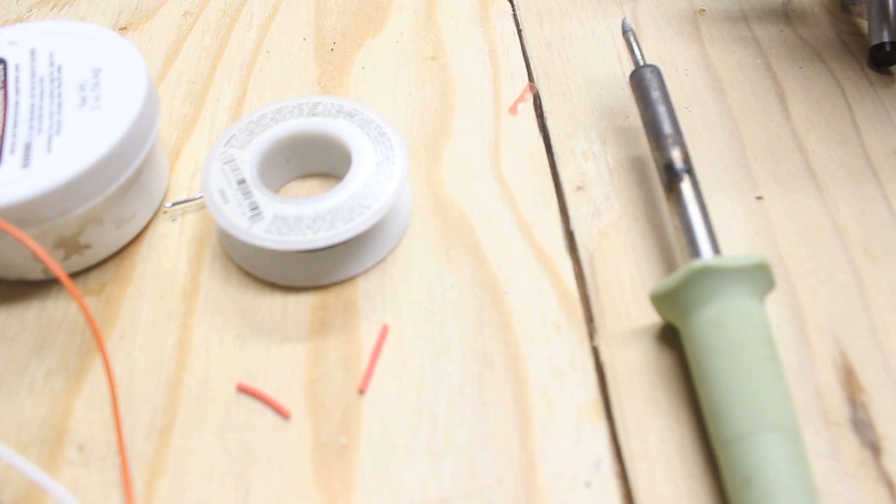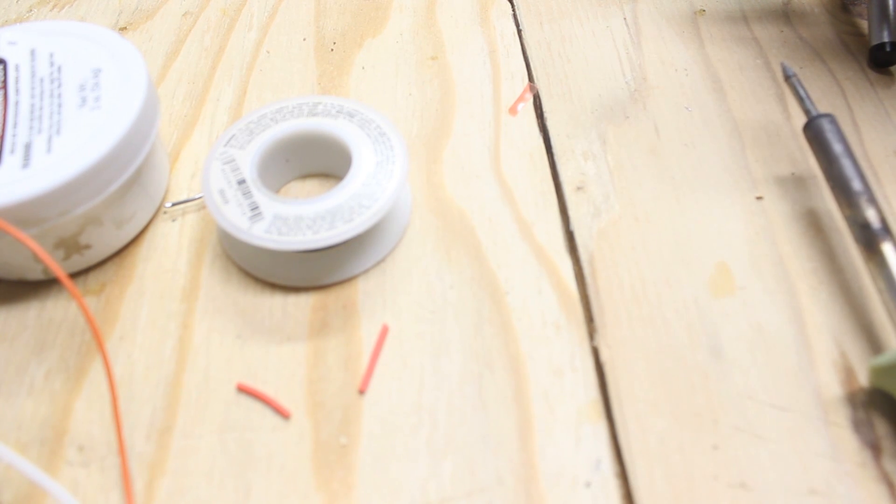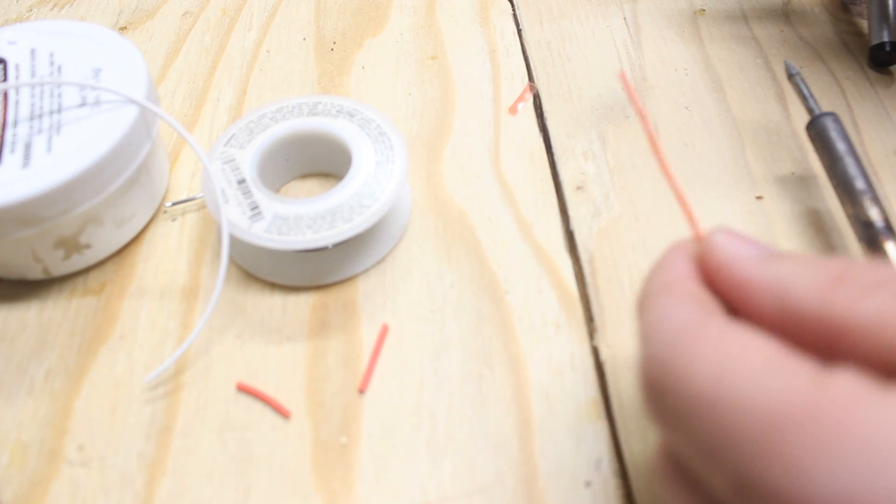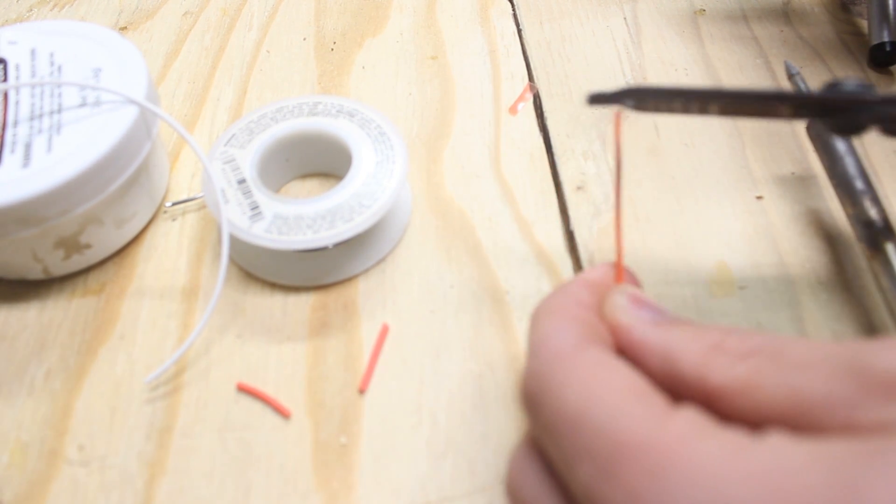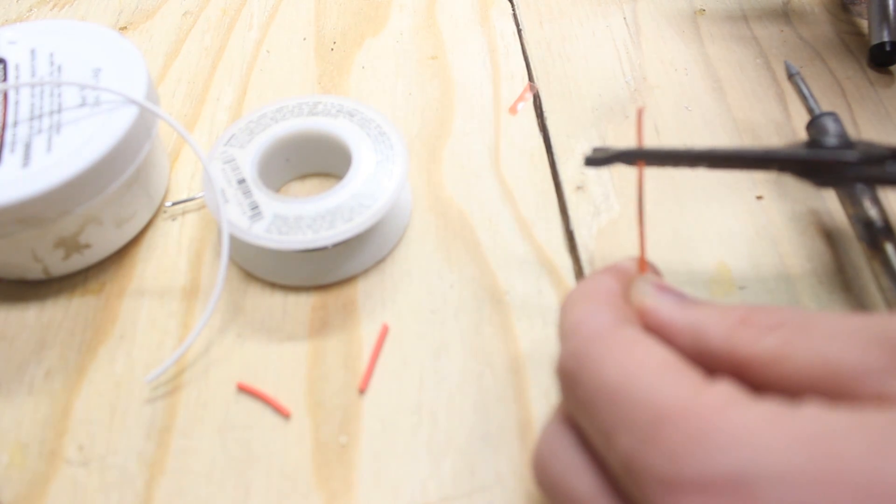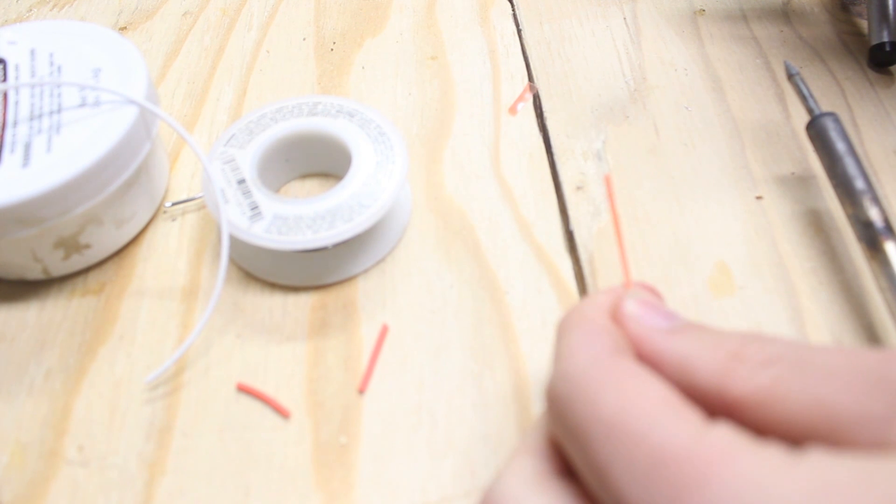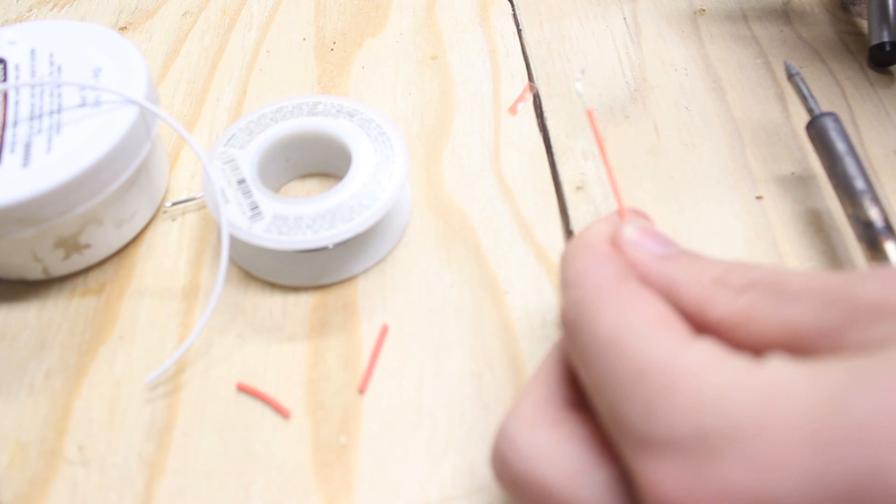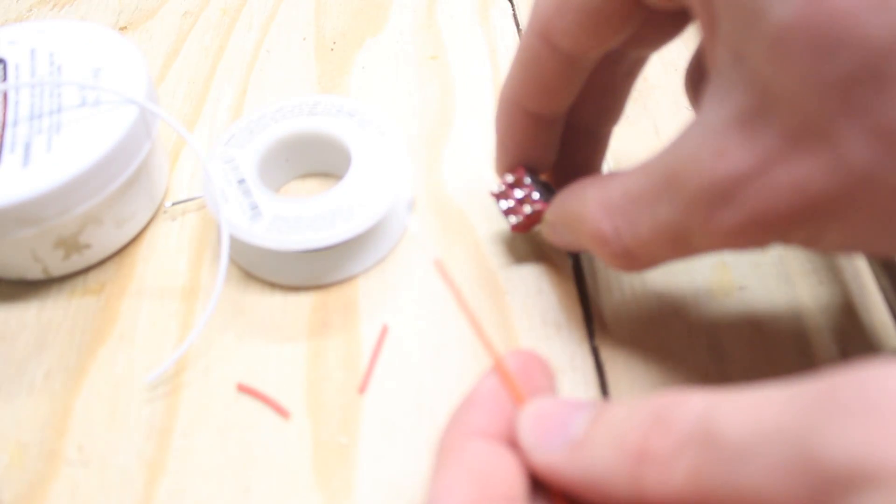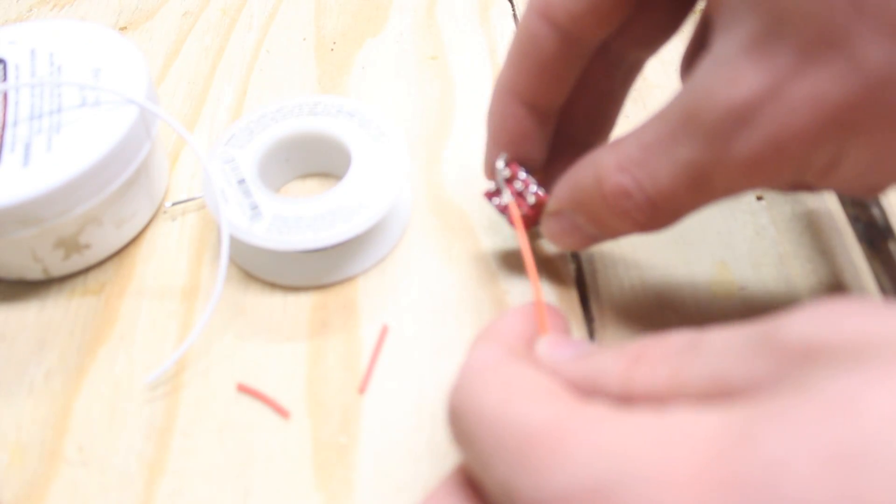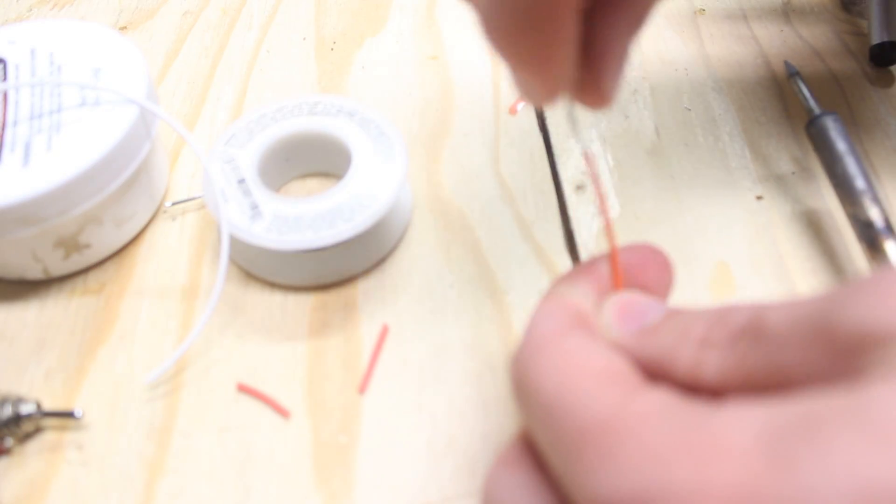I'm going to start off here with preparing the two wires. This is probably the simplest part of it. You're going to want to go ahead and start off by stripping off part of the end of the wire. Strip off a little bit more than a normal feeder wire because you're going to have to run it from one pole to the other lengthwise like this or across. So it needs to be pretty long.